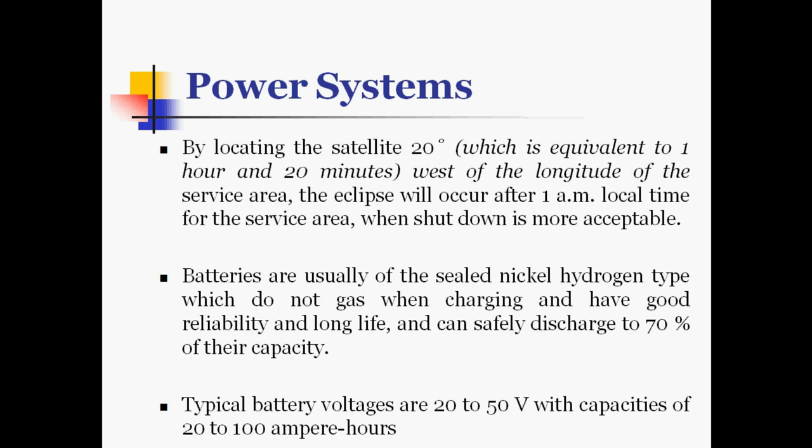By locating the satellite 20 degrees, which is equivalent to 1 hour and 20 minutes, west of the longitude of the service area, the eclipse will occur after 1 a.m. local time for the service area, when shutdown is more acceptable. Batteries are usually of the sealed nickel hydrogen type, which do not gas when charging and have good reliability and long life, and can safely discharge to 70% of their capacity. Typical battery voltages are 20 to 50 volts with capacities of 20 to 100 ampere hours.